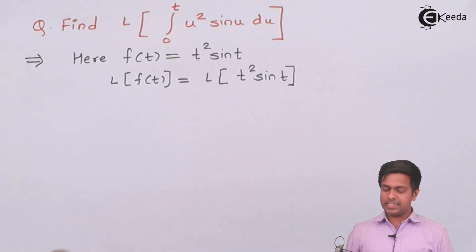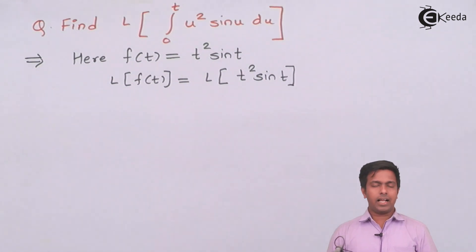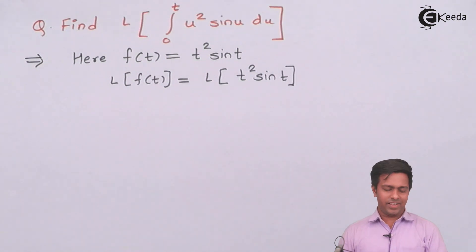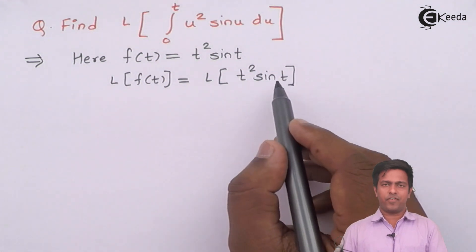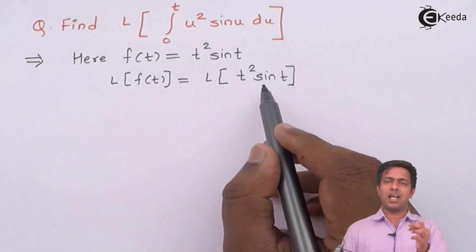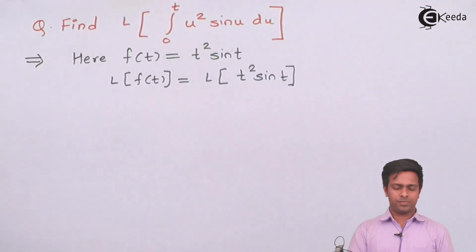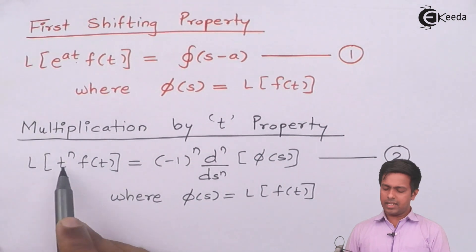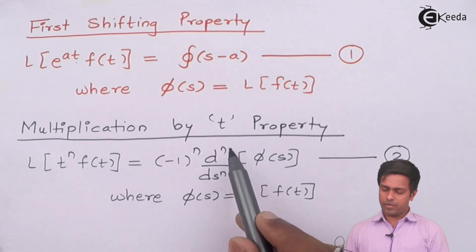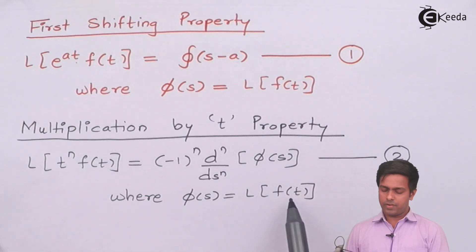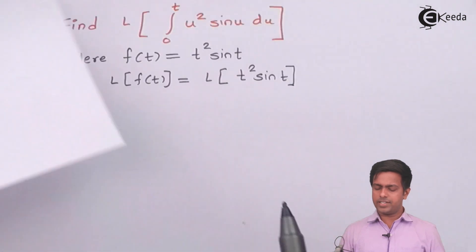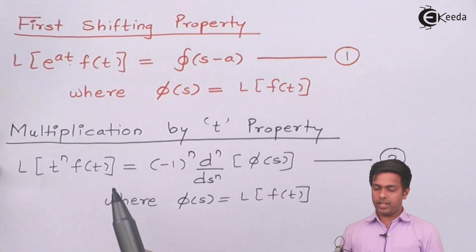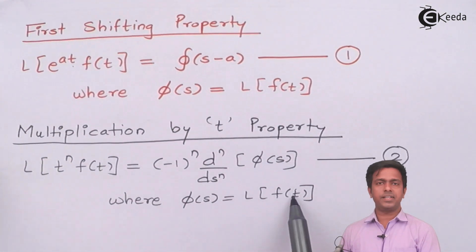To get the Laplace of t² sin(t), if we observe the term carefully, it matches the multiplication by t theorem — sin(t) is the base function and it is being multiplied by t². As per the multiplication by t property, L{tⁿ f(t)} = (−1)ⁿ (dⁿ/dsⁿ) φ(s), where φ(s) is the Laplace of that base function. Here n = 2, so this becomes (−1)² (d²/ds²) φ(s), and φ(s) = L{sin(t)}.